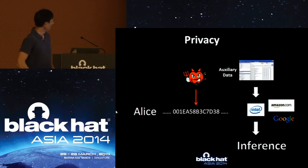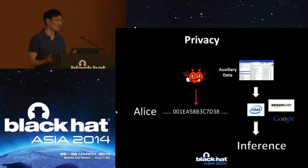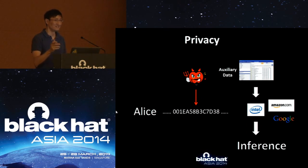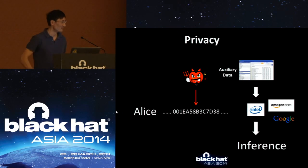And finally, you have to explain all this to Alice — what data you're collecting, what inferences are possible. In security, Alice is basically trying to communicate nothing to the attacker, and 'nothing' is easy to understand. But in privacy, you're trying to actually communicate some non-trivial data. Trying to explain this to the user introduces human-computer interface problems that are more involved than with security.